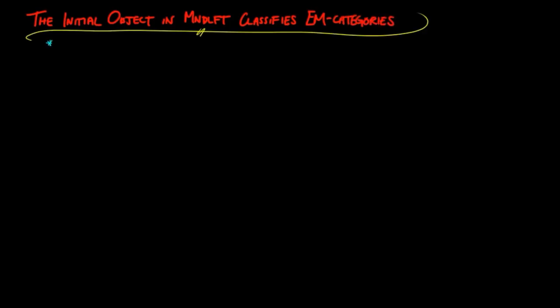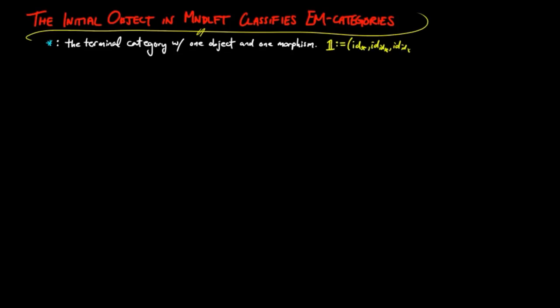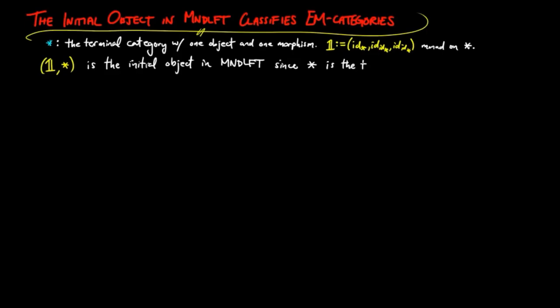In this video, we show that the initial object in the category of monad lifts classifies the Eilenberg-Moore categories. We will denote the terminal category by an asterisk. Recall that the terminal category has only one object and one morphism, which necessarily is the identity morphism. Then the identity monad for the terminal category, which we denote by a bold-faced 1, is the initial object in the category of monad lifts, since the terminal category is the terminal object in the metacategory of categories.